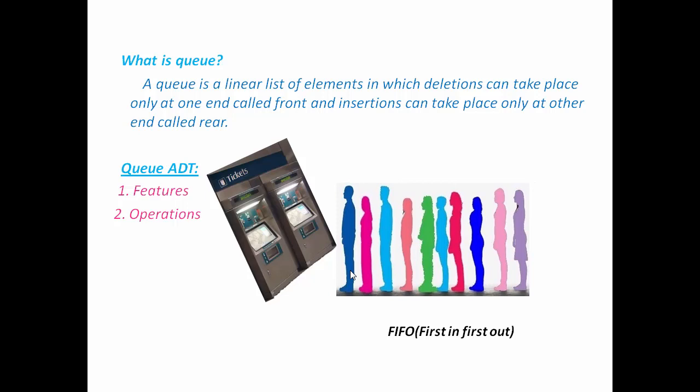When a new person comes to collect the ticket, they will stand at the end or tail of the queue. So an element or item will be deleted from one end of the queue called front, and insertion can take place at the other end called rear.